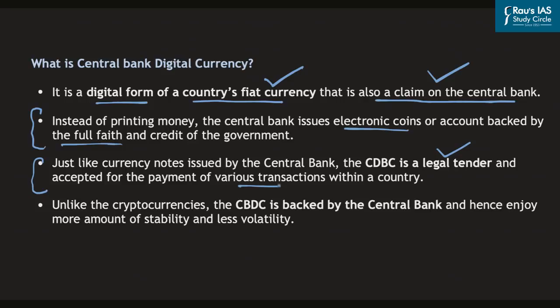How do central bank digital currencies compare to cryptocurrencies? Cryptocurrencies are considered democratic in nature because they are based on blockchain technology and do not have the backing of any central bank — that is exactly why their value is very unstable. Unlike cryptocurrencies, the central bank digital currency is backed by the central bank, so it is supposed to enjoy more stability and will be less volatile. In summary, CBDC is similar to fiat currency, is legal tender, and unlike cryptocurrency, has central bank backing and is not distributed or democratic in nature.